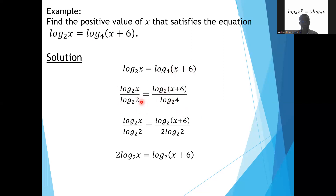Now log 2 to base 2 gives us 1, because when we convert it to indicial form we get 2 equals 2 raised to the power 1. And log 4 to base 2 — this 4 can be written as 2 squared — and then we bring the 2 in front using the third law of logarithms, giving us 2 log 2 to base 2, which equals 2. We then multiply both sides by 2, and we get 2 log x to base 2 being equal to log (x plus 6) to base 2.